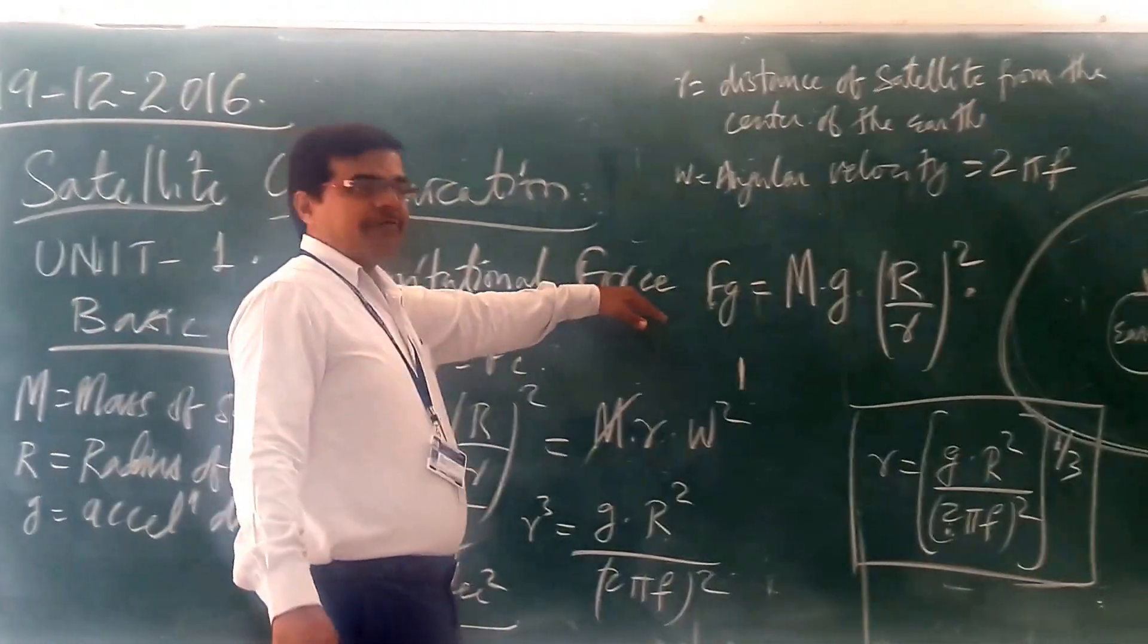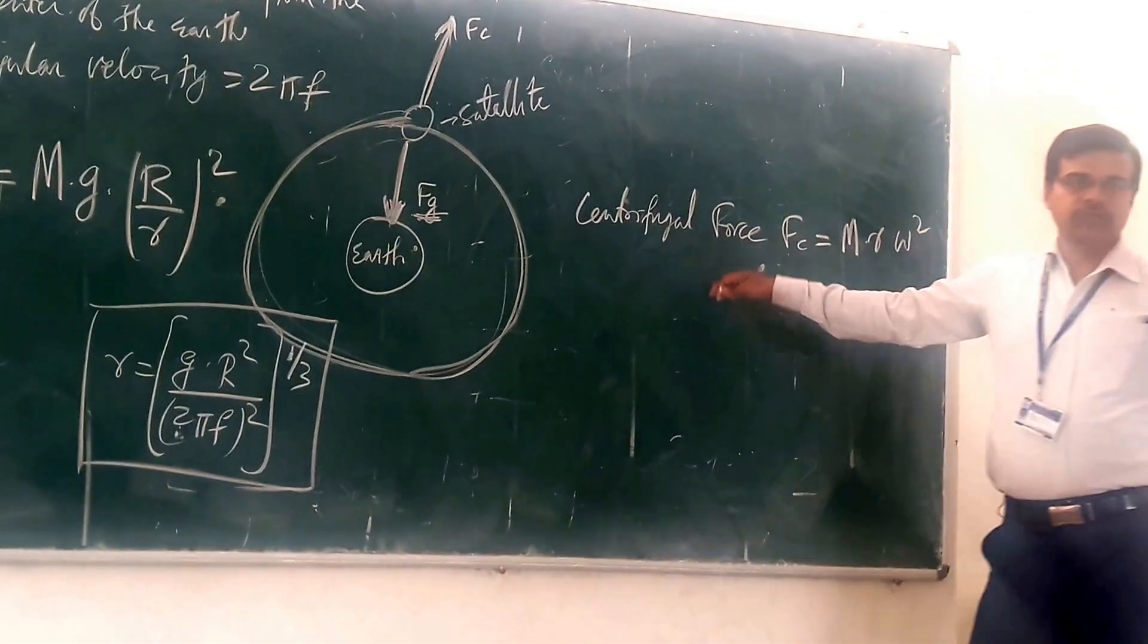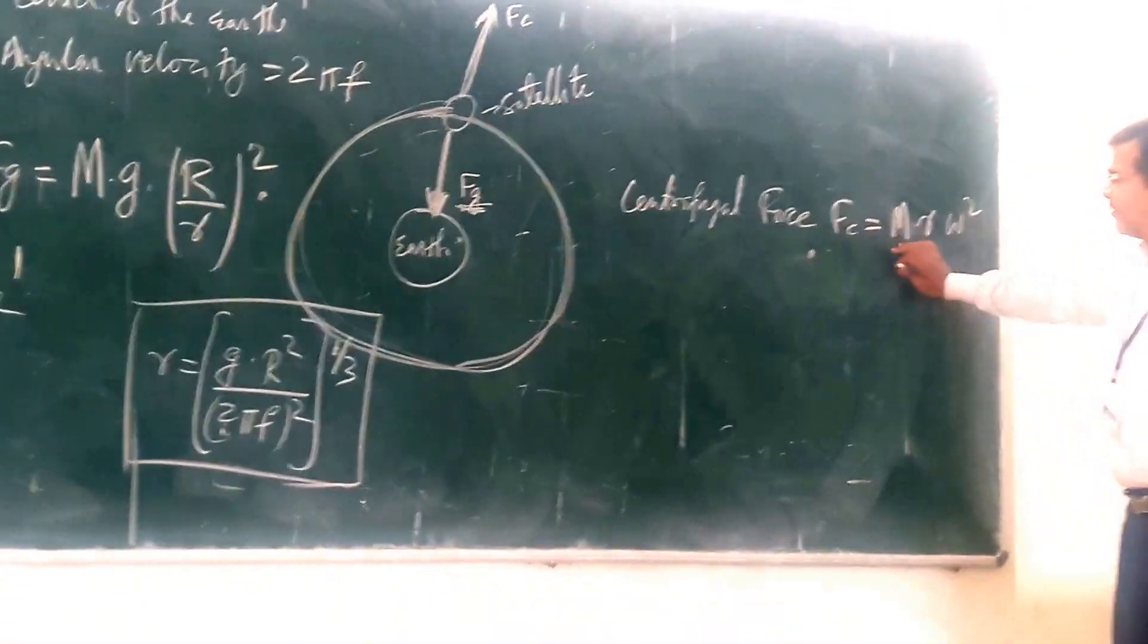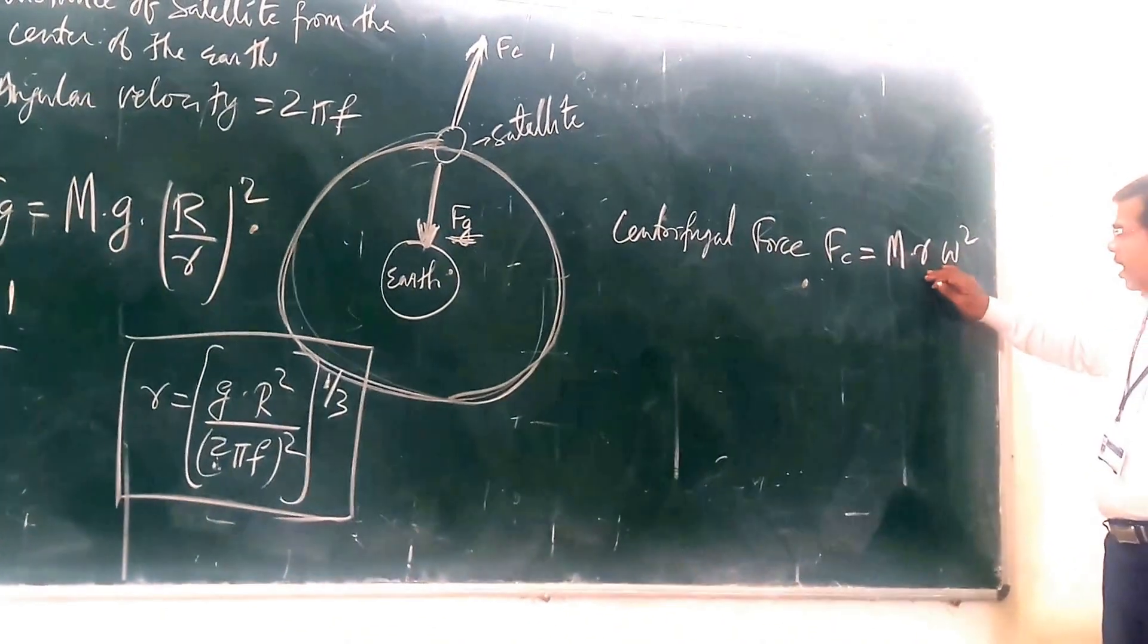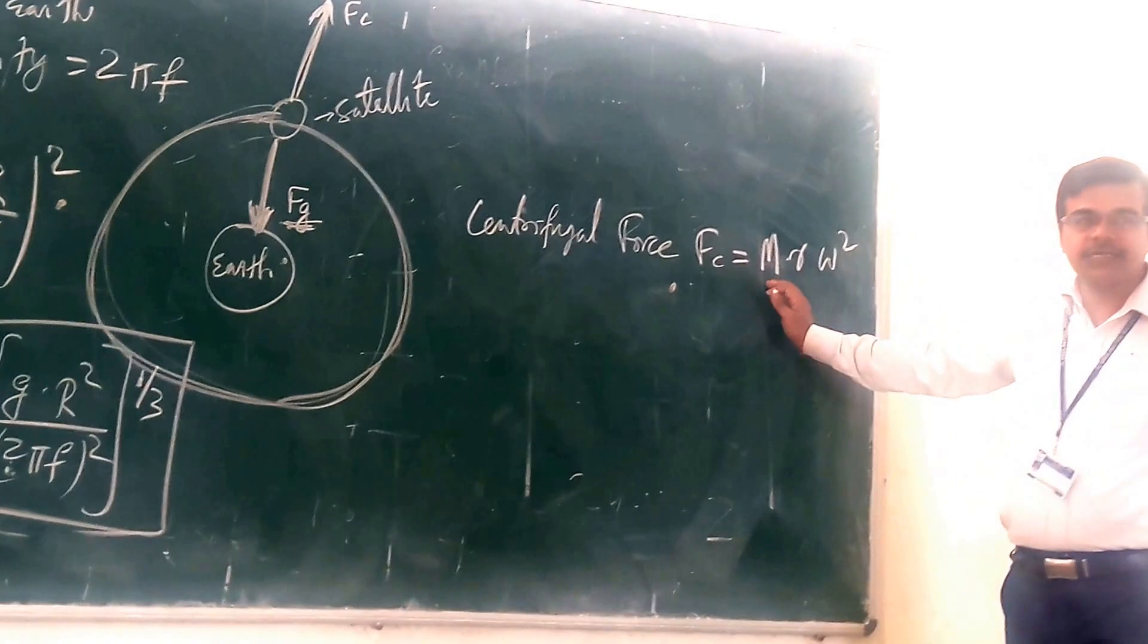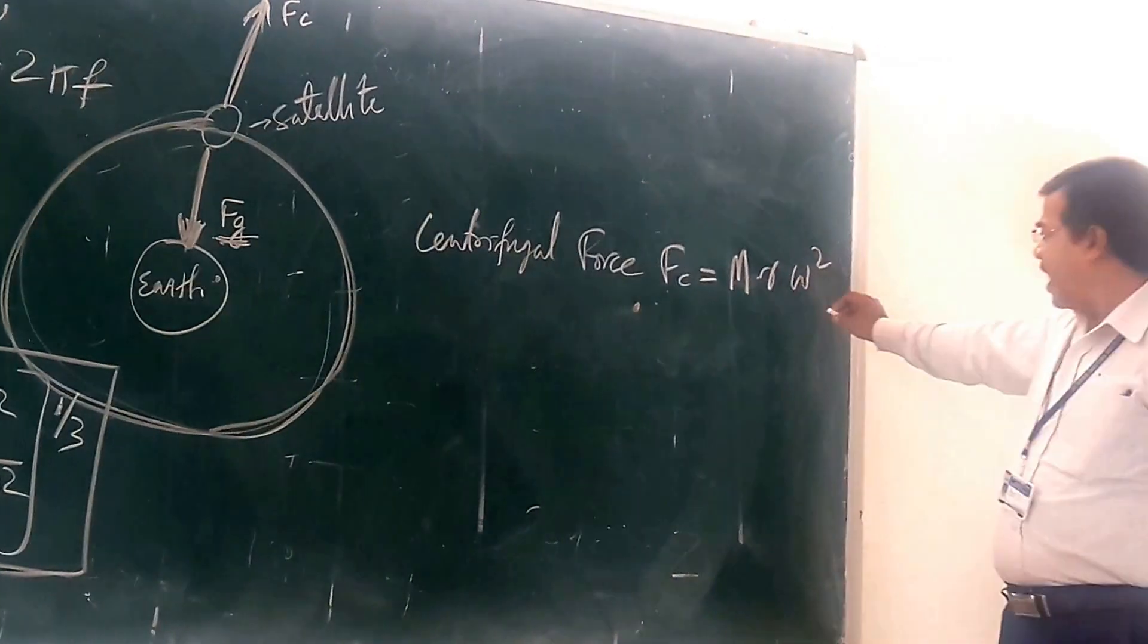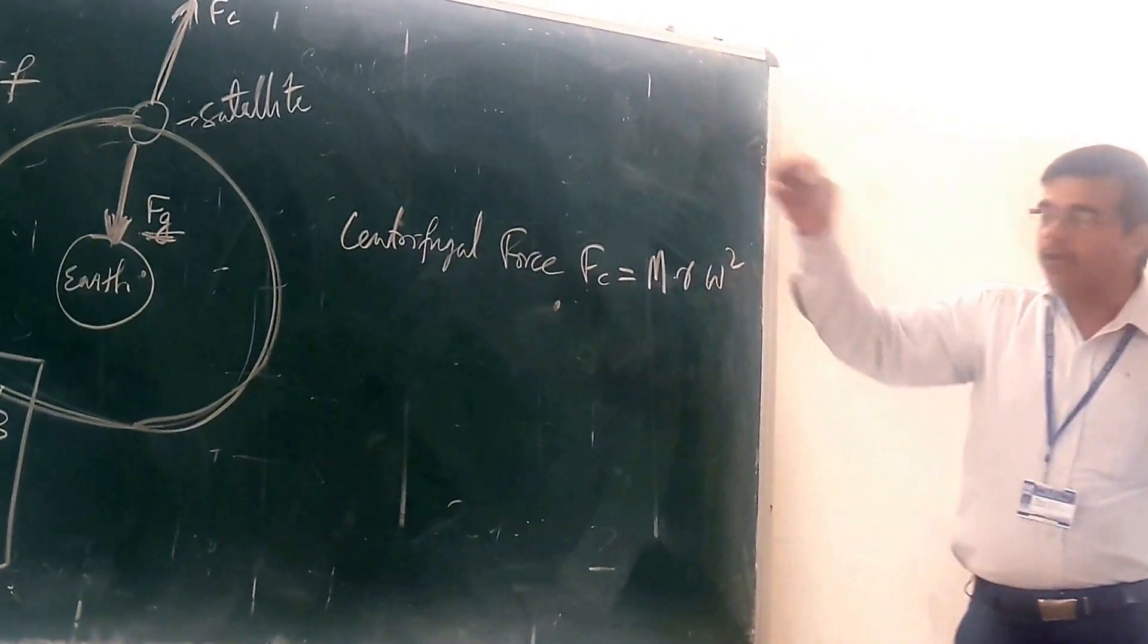Here we are going for the centrifugal force. What is the centrifugal force? Centrifugal force is MR omega squared. M is the mass, R is the distance from the satellite, and this is the angular velocity. What is this angular velocity? The angular velocity is 2πF, where F is the frequency of rotation.